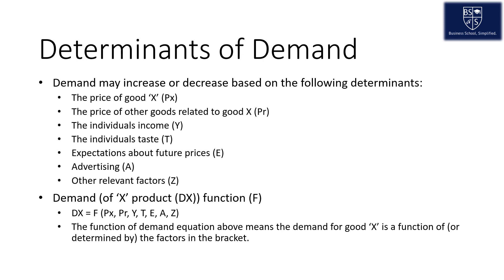Equationally, demand could be explained as dx equals f, whereby f is the determinants. Demand of product x equals the functional combination of px — the price of product x — or pr being the price of other goods, y, t, e, and so forth.